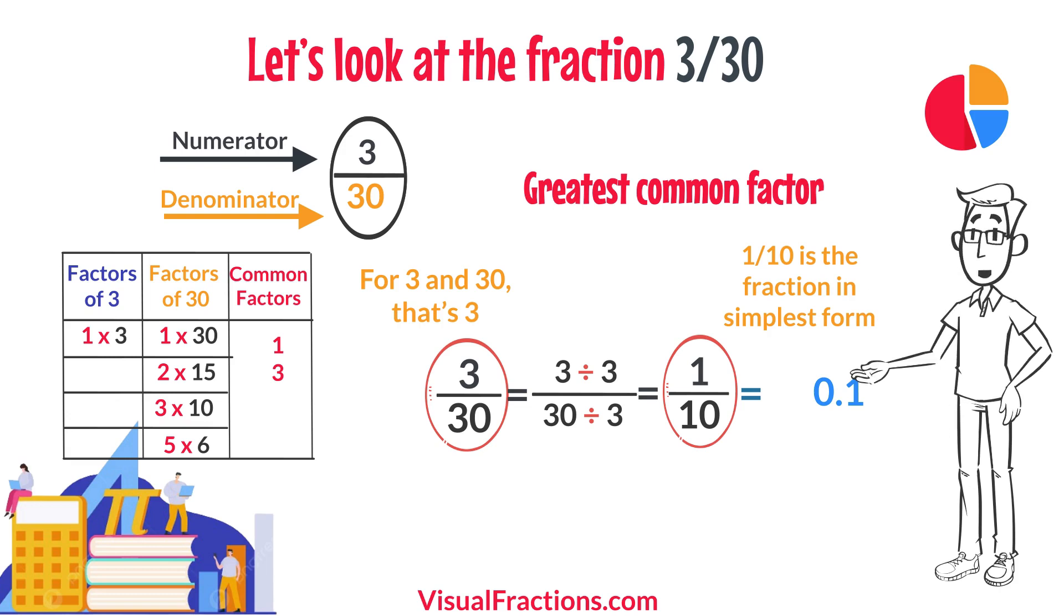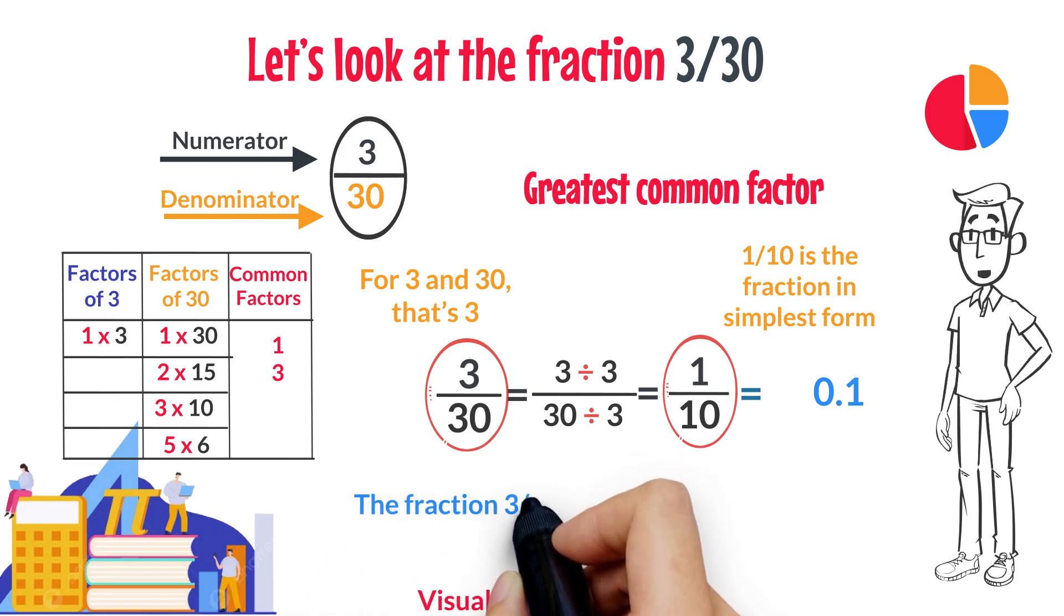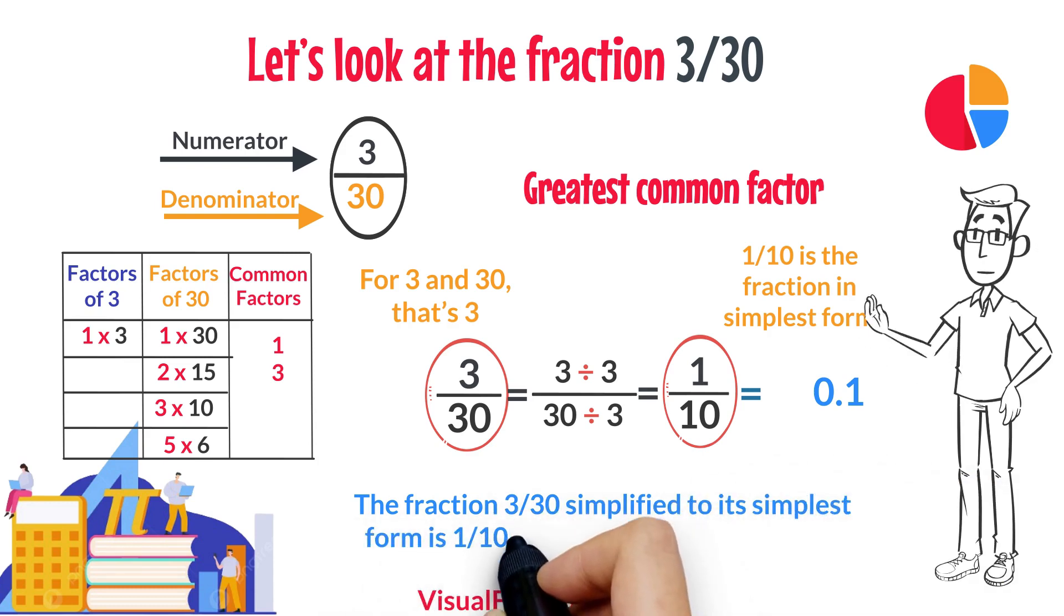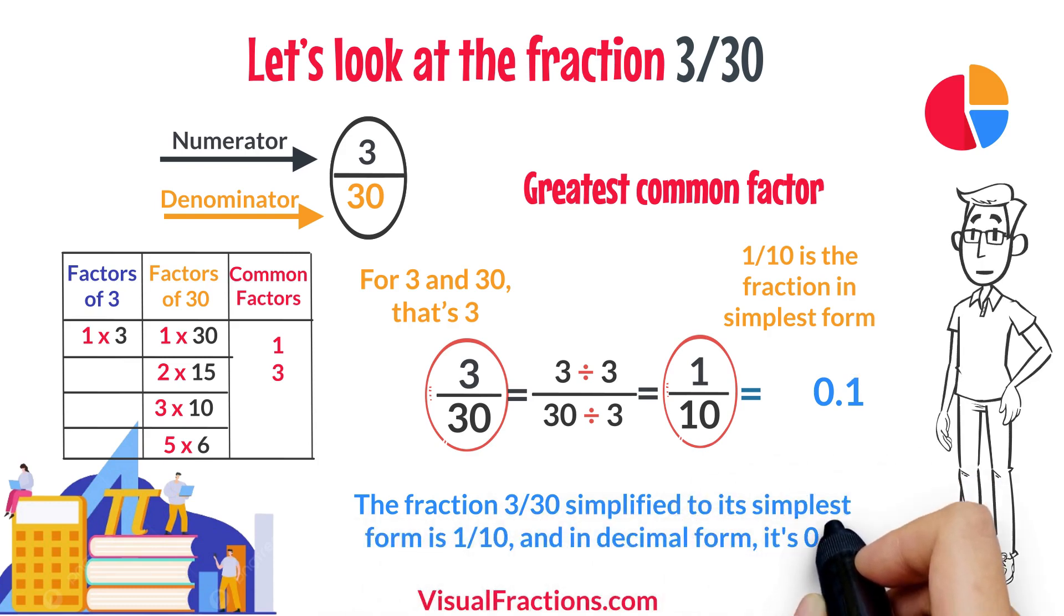So, there you have it. The fraction 3/30 simplified to its simplest form is 1/10, and in decimal form, it's 0.1.